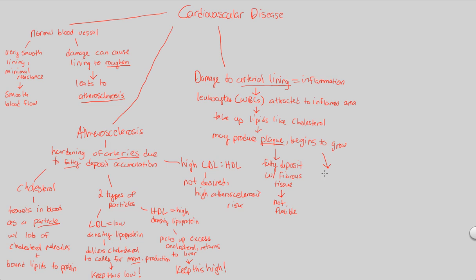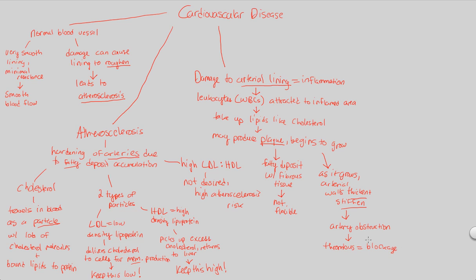As this plaque grows, it will continue to accumulate if you have constant disruption and inflammation of the arterial lining. As it grows, the arterial walls themselves will thicken and stiffen. Thickening and stiffening of the arterial wall is absolutely not what you want. This is essentially going to cause what is known as an artery obstruction. An artery obstruction is otherwise known as a thrombus — a blockage that is not supposed to be there.